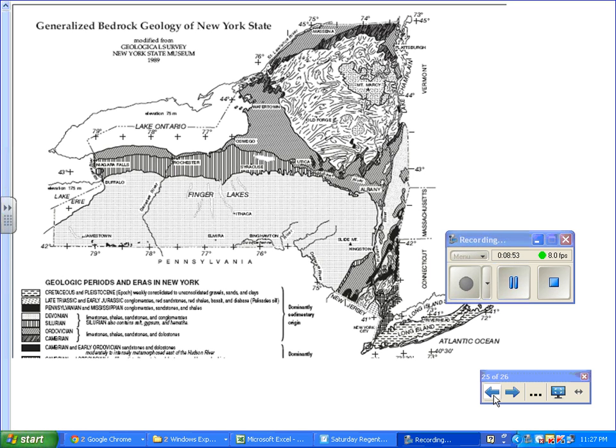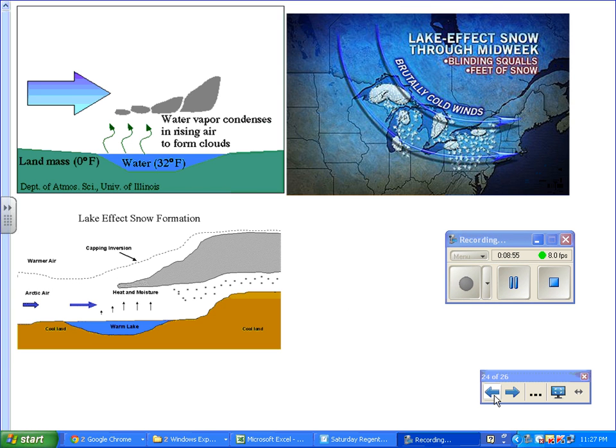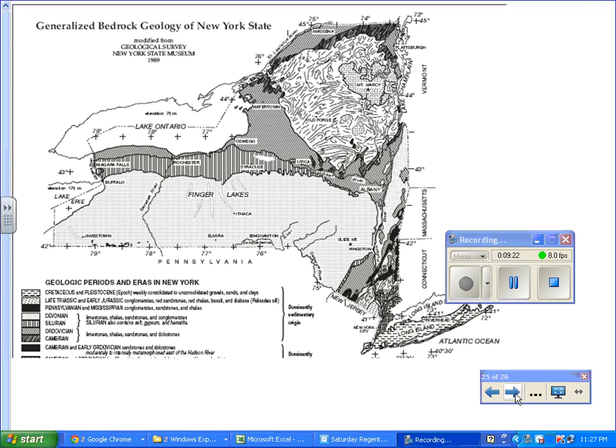When the lakes freeze, then that source of moisture disappears or is not available, and the lake effect snow machine stops. But as long as the lakes are not frozen, you have this large source of water vapor which eventually gets picked up by the winds. It cools, condensing from clouds, and then dumps a ton of snow. That's lake effect snow.